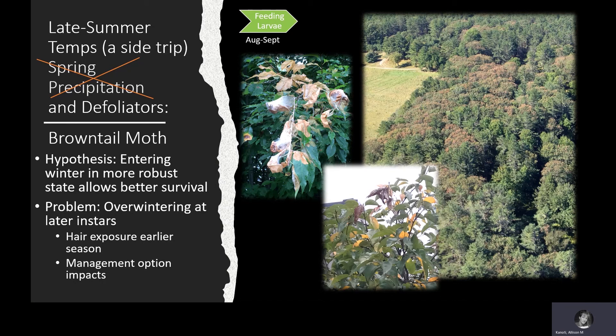There are problems with this faster development. One is the potential for earlier buildup of toxic hairs in the environment in spring when caterpillars begin feeding. Another is related to management options. Many biorational pesticides such as Bt, tebufenozide, and spinosad work best on earlier instar caterpillars. If you have more mature caterpillars leaving the winter webs, you have a much shorter window where you have both leaf expansion and early instar caterpillars — and both are important because the caterpillars must consume these pesticides for them to be effective.